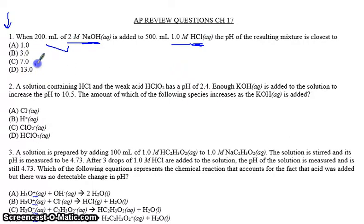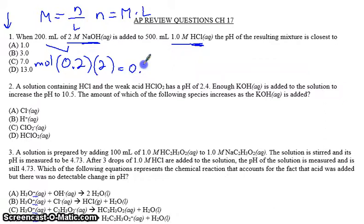What we want to get is the moles of this base, and let's multiply the liters by the molarity, because molarity, remember, is moles per liter, which means moles is molarity times liter. So we have 0.2 multiplied by 2. 0.2 times 2 is 0.4. So we have 0.4 moles of the base. If we get the acid, we have 0.5 multiplied by 1, which gives you 0.5.